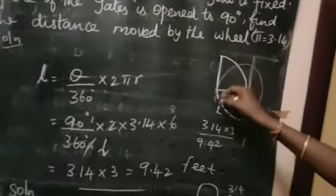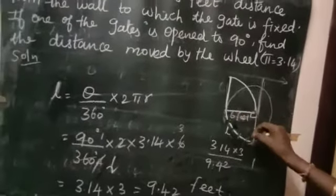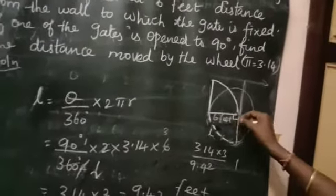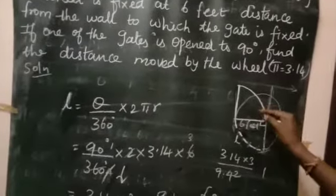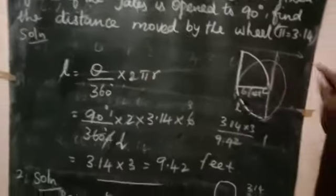If the gate is opened to 90 degrees, it makes an angle of 90 degrees. So find the distance moved by the wheel.